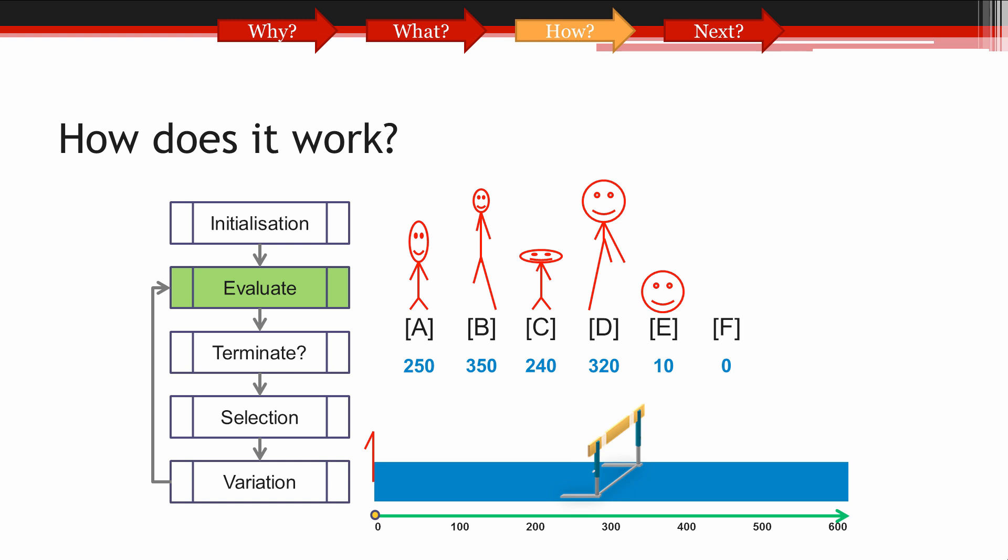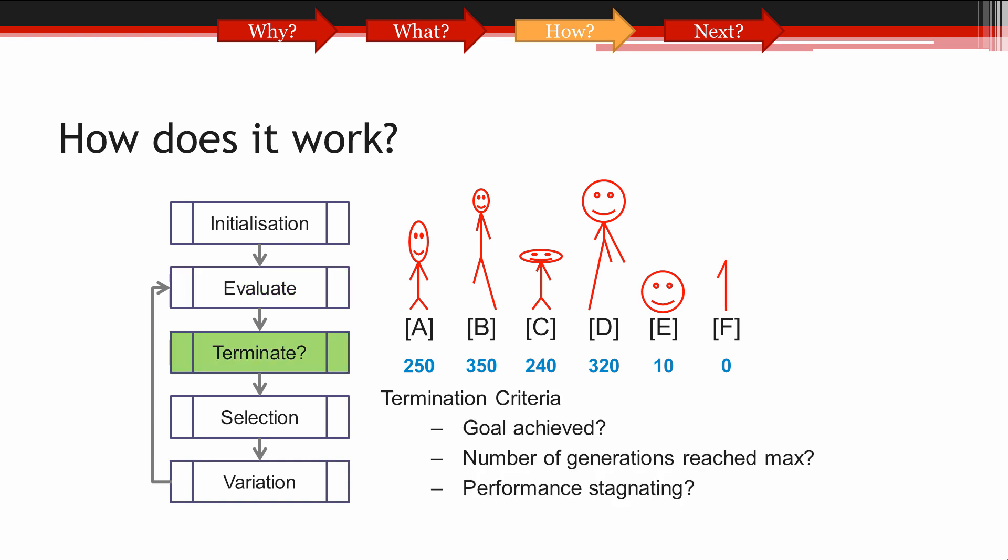And now we have a fitness score for every solution in our population. Now that we are in what is called the generational loop, where we will try to improve our solutions over and over again, we need to figure out when to stop looping so that the process doesn't continue forever. This is called the termination stage. At this point, we would check the current state of the evolutionary process to see if we have satisfied some of the rules for stopping.